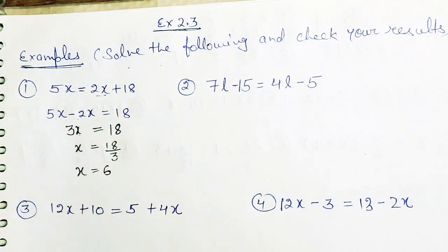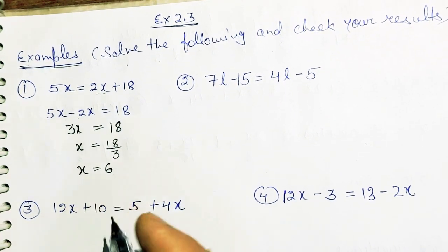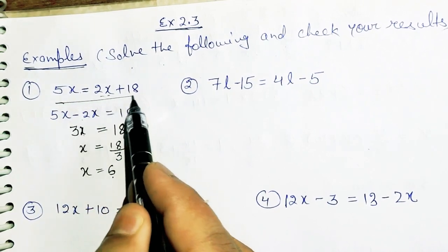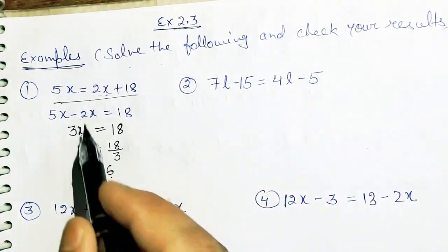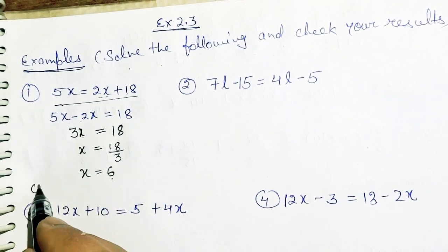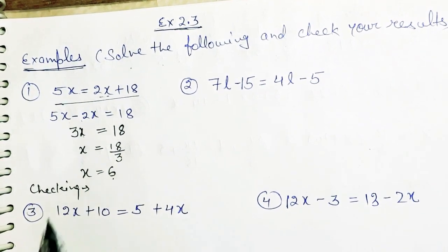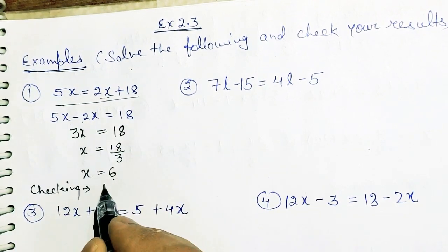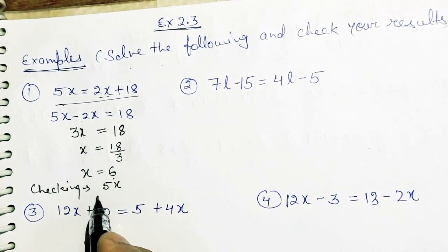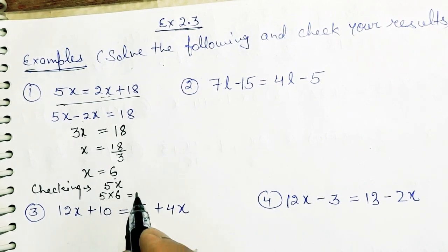So you can check your answer as well. How do you check your answer? You have to put the value of x in the given question. So what is the given question? 5x. You have to take the LHS. Checking: what is LHS? 5 into x, that is 5x. Put the value of x as 6: 5 times 6 equals 30.